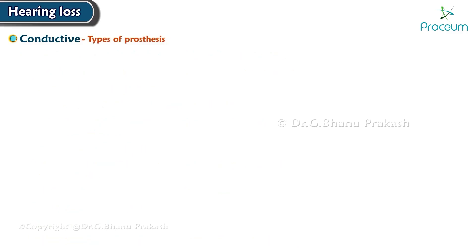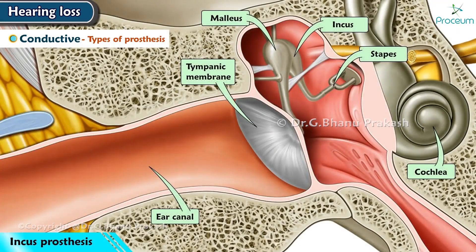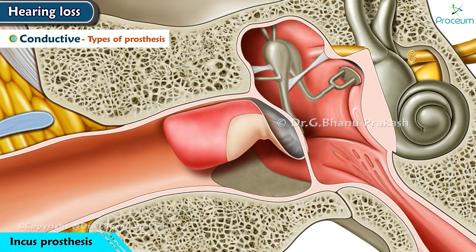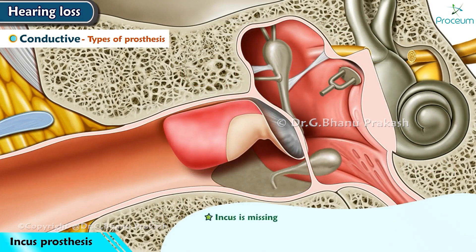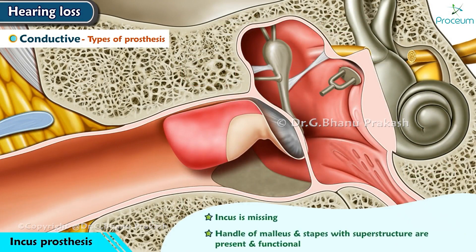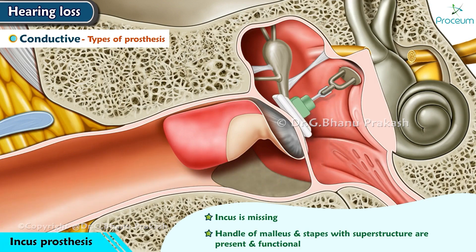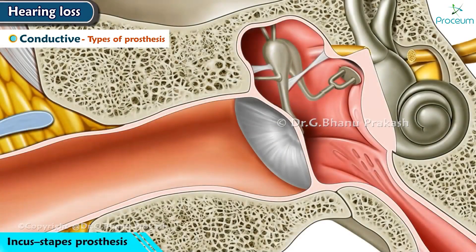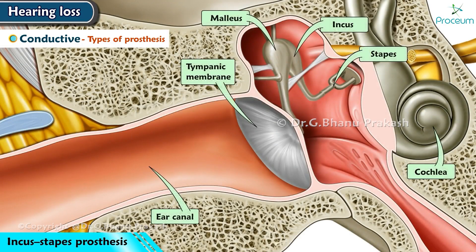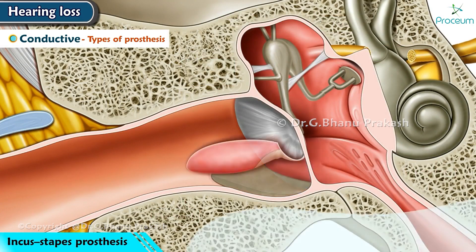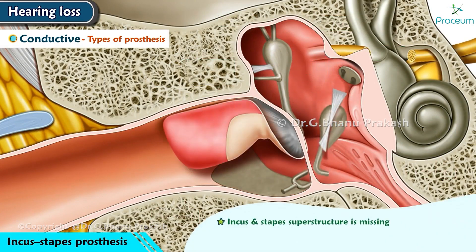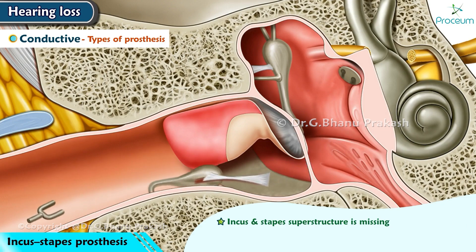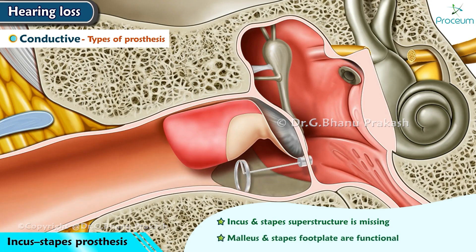Types of prosthesis: The incus prosthesis is used when the incus is missing but the handle of malleus and stapes with superstructure are present and functional. The incus-stapes prosthesis is used when the incus and stapes superstructure are missing but the malleus and stapes footplate are functional.